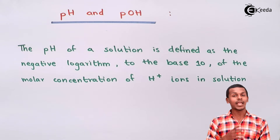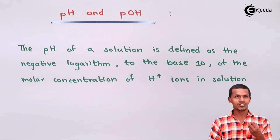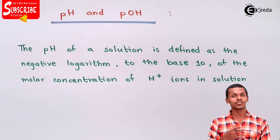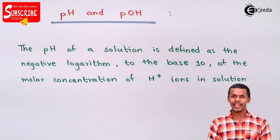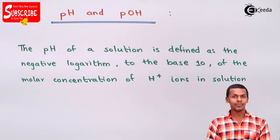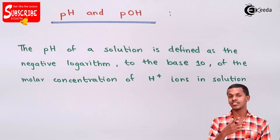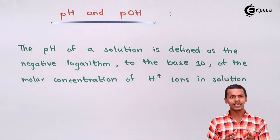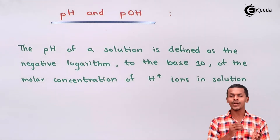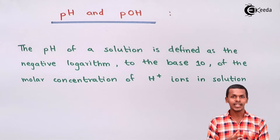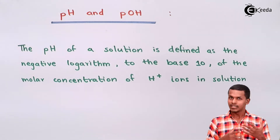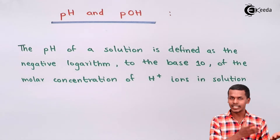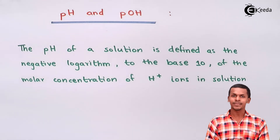Talking about a diprotic acid — one molecule of a diprotic acid will ionize and give us 2 moles of H+ ions, and a triprotic acid will give us 3 moles of H+ ions. This indicates that whenever a particular acid is dissolved in water, it will liberate that many H+ ions depending on whether it is diprotic or triprotic.